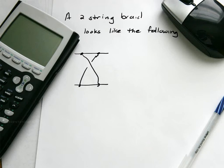You have two strings coming down, and in this example that I've drawn here, you have one string crossing over the other string on the bottom. So that's an example of a two-string braid.